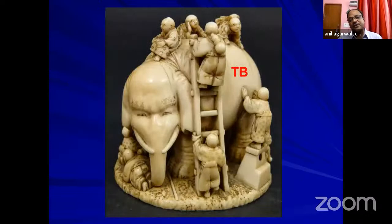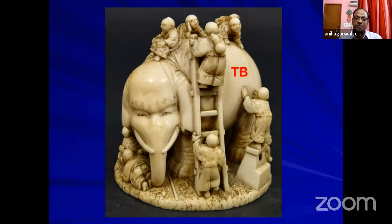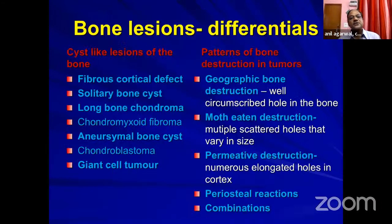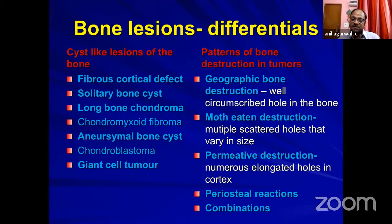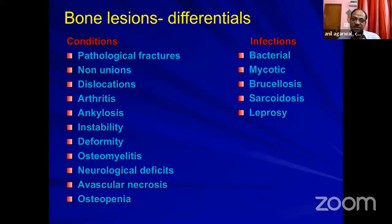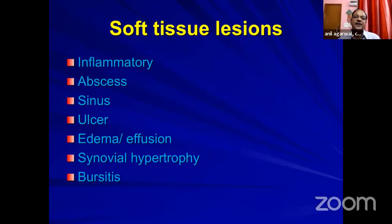This can be likened to seven blind men touching an elephant in different places, which very correctly illustrates the scenario of osteopediatric osteoarticular tuberculosis. Let's recapitulate the bone differentials we commonly see in outdoor practice: cyst-like lesions, tumours, pathological fractures, infections, and soft tissue lesions — and tuberculosis can mimic any of them.